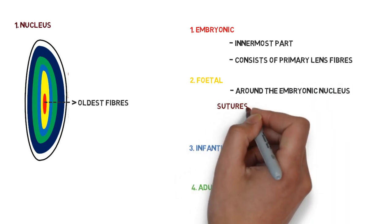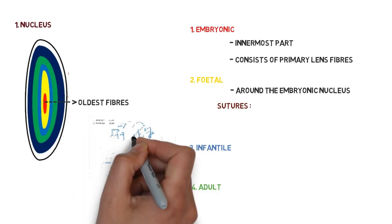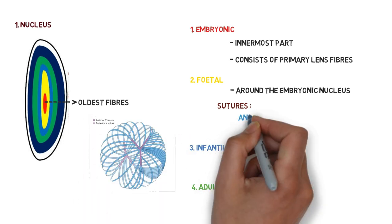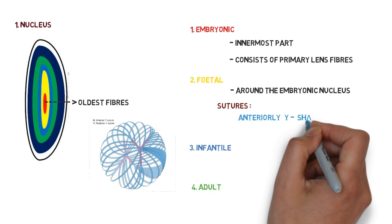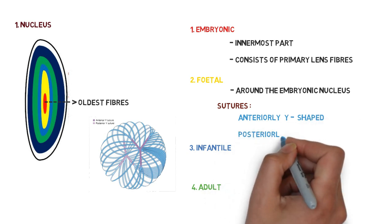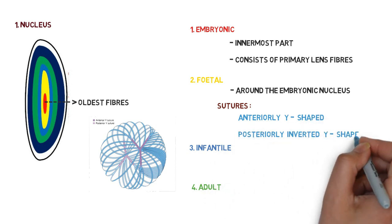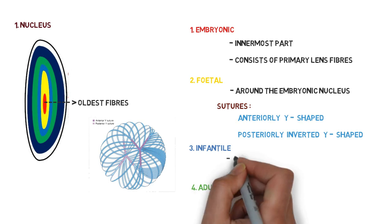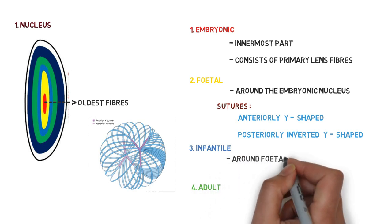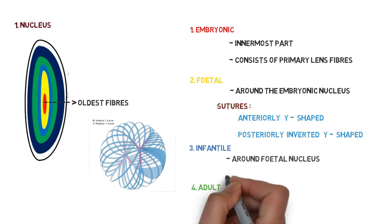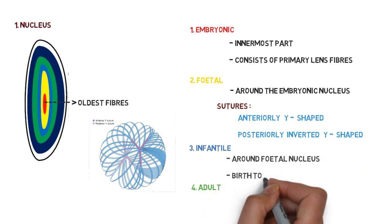Its fibers meet around the sutures, which are anteriorly Y-shaped and posteriorly inverted Y-shaped. Look at this diagram. The third one is infantile nucleus—it surrounds the fetal nucleus and it corresponds to the lens from birth to puberty. And the last one is adult nucleus. The adult nucleus corresponds to puberty to the rest of life, and it surrounds the infantile nucleus.